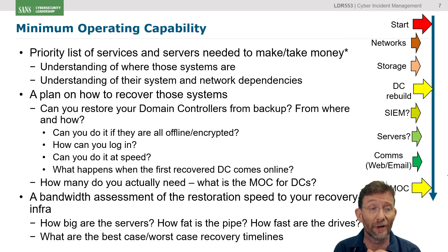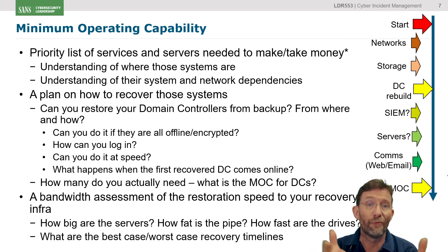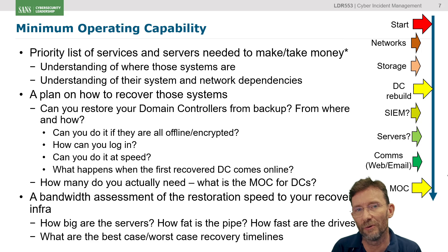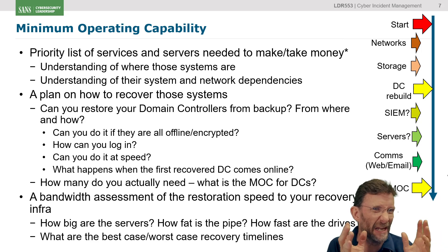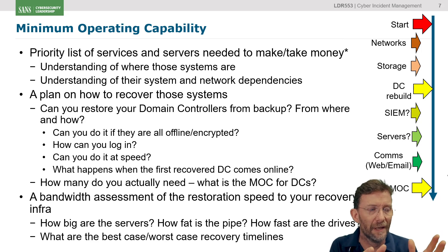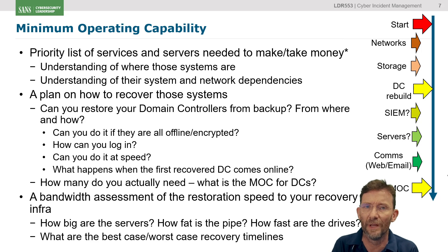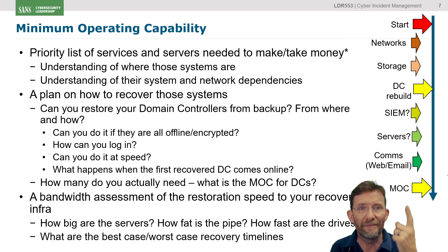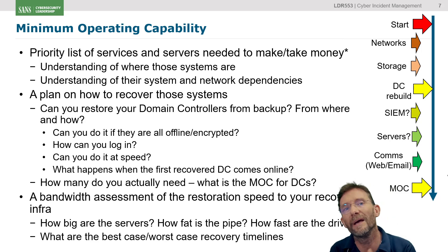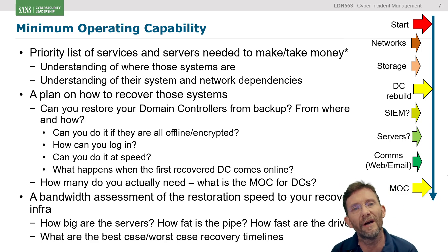And if you have attacker-compromised domain controllers, you might need to do a complete flatten and rebuild. For example, if you had 30 domain controllers and the attacker accessed 10 of them, encrypted them, and possibly modified some of those systems — you'll be thinking, what do I do now? Can I trust all of the accounts that are in that environment? So you have this whole big timeline that you need to understand.